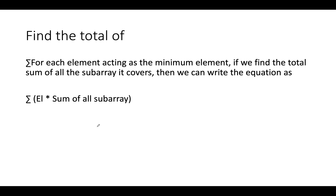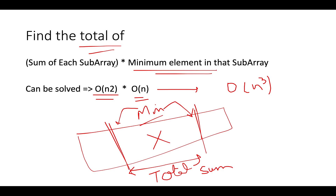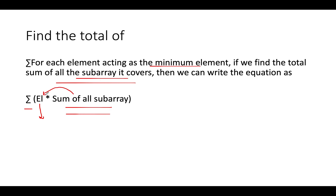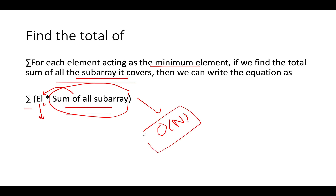Instead of going subarray by subarray, let's assume each element acts as the minimum element, then find the total sum of all subarrays it covers. The equation reduces to: for each element acting as the minimum, identify the sum of all subarrays where this element is the minimum. The problem reduces to finding the sum of all subarrays wherein the ith element is acting as the minimum element. We will solve this entire equation in time complexity of O(n).